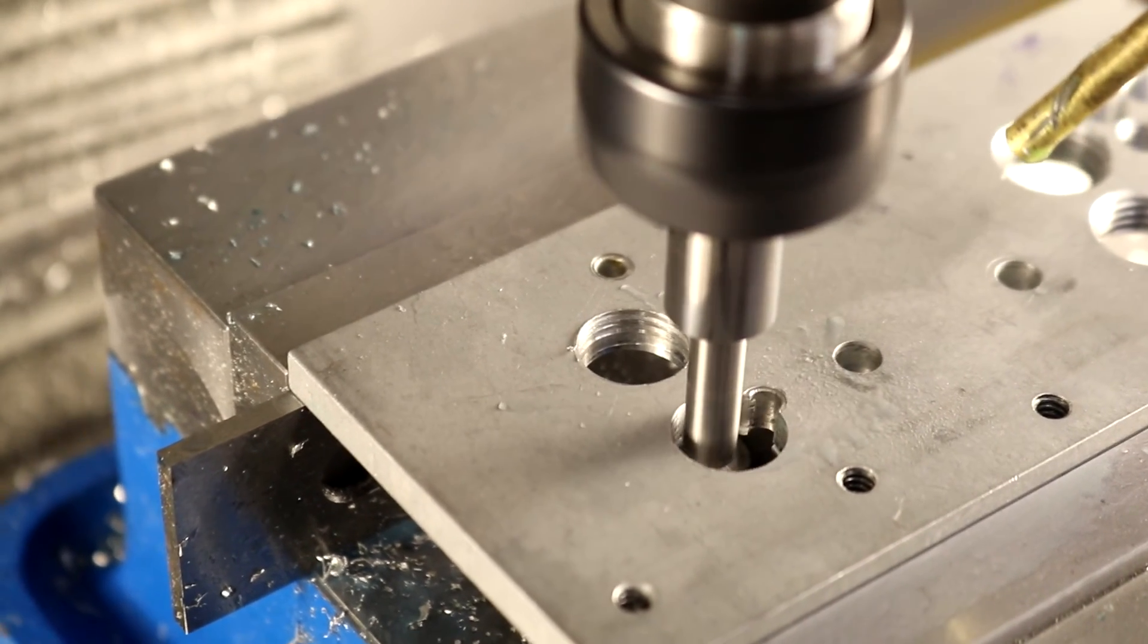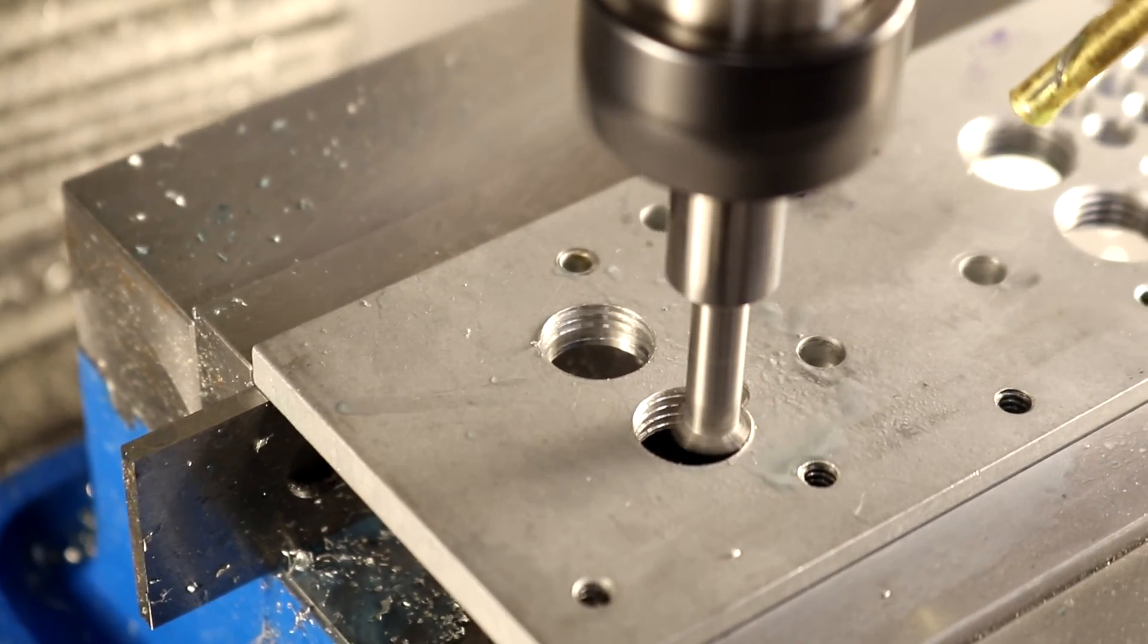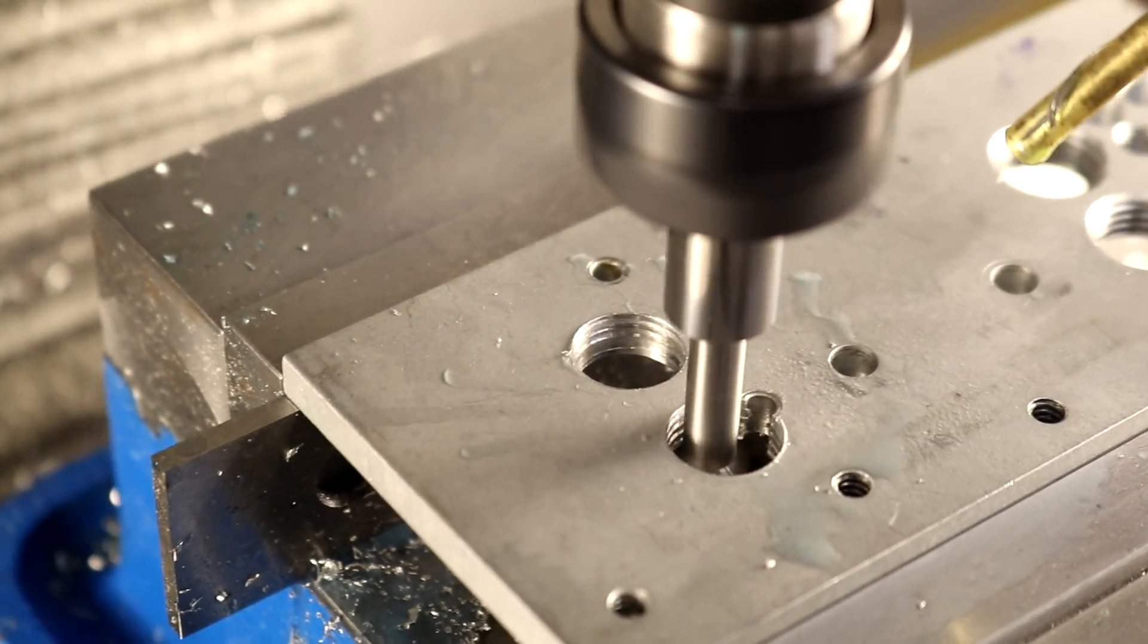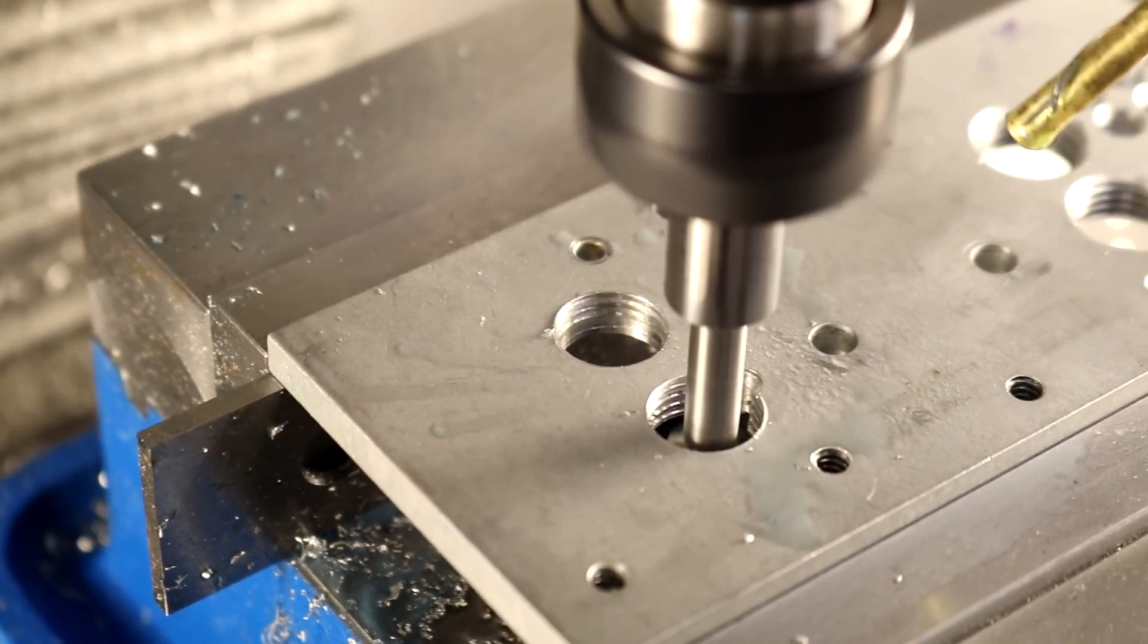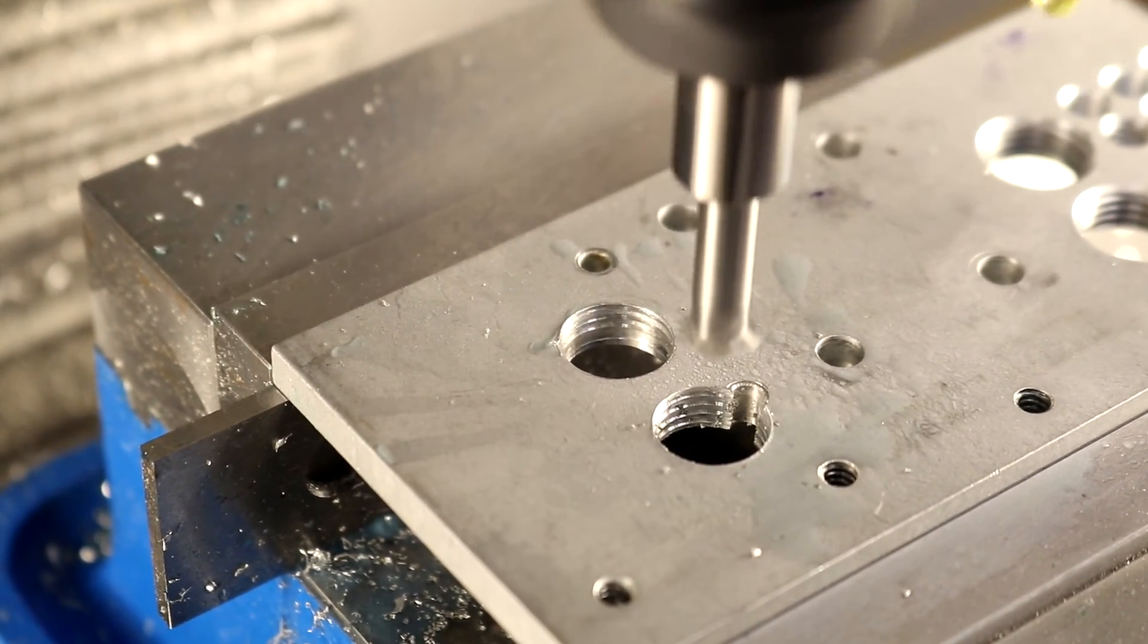A huge advantage of thread mills is that a single thread mill can cut a variety of internal and external threads of different diameters and if using single point thread mills, a variety of thread pitches. But the interpolation required for thread milling is going to always take more time than using rigid tapping with a specialized tool.